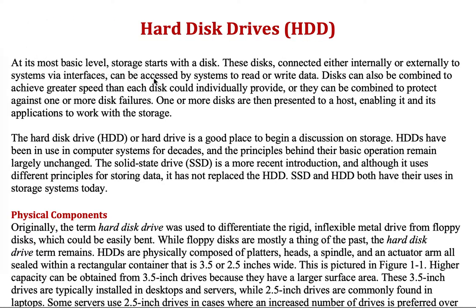When we talk about storage, we basically talk about persistent storage. But when we talk about memory, we are usually talking about volatile memory, such as main memory — random access memory. Hard disk drives are disks connected either internally or externally to the system via interfaces such as USB and other connectors.